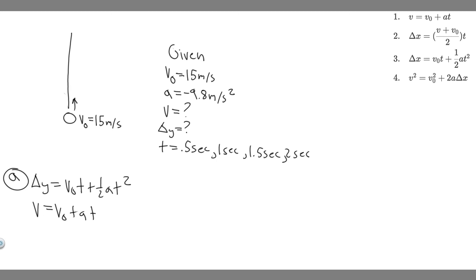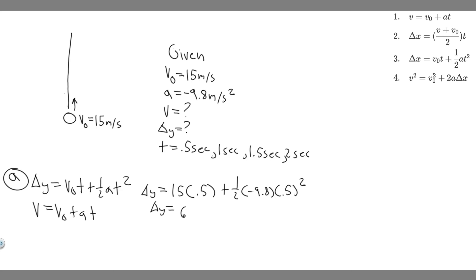I'm going to work through Part A and then give you the answers for the rest, since all you have to do is plug in different times. For displacement: delta Y equals 15 times 0.5 plus 0.5 times negative 9.8 times 0.5 squared. That gives delta Y equals 6.275 meters — that's how far the ball travels upward in 0.5 seconds.